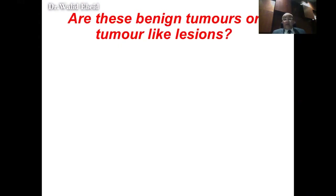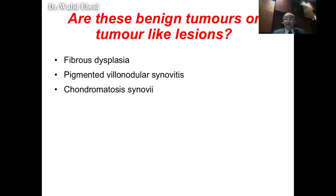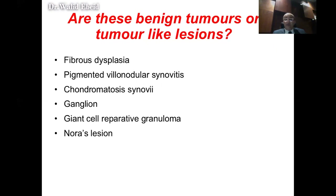As we come to the end of the lecture, a note on certain lesions considered benign tumors that are actually not tumors — they are tumor-like conditions. These include fibrous dysplasia, pigmented villonodular synovitis, synovial chondromatosis, ganglia, giant cell reparative granuloma, and nidus lesions. These are not actual tumors; they're not benign tumors — they're tumor-like conditions. In many classifications they are grouped as part of the benign tumor lesions, but you can still group them as tumor-like conditions.